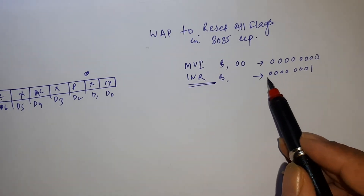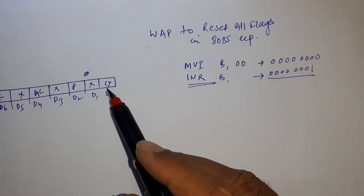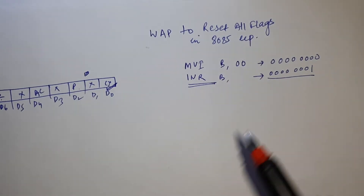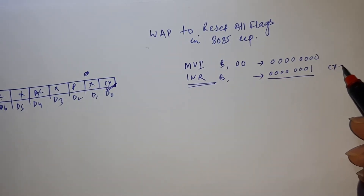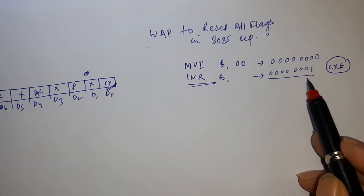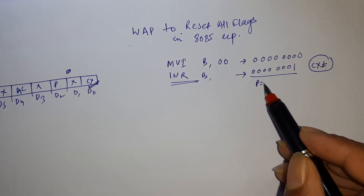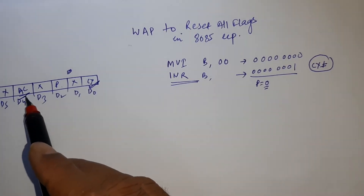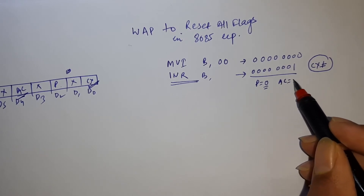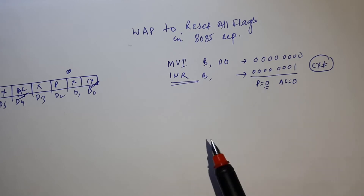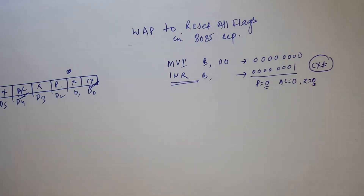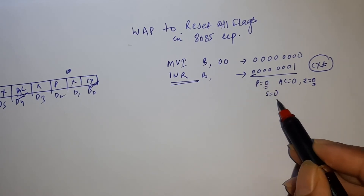Let's check which flag is set or reset in this case. For the parity flag, the number of 1s is odd, so parity flag is reset. For auxiliary carry, there is no carry generated, so auxiliary carry is also reset. The zero flag: total output should be 0 but output is 01, so zero flag is also reset. Sign flag value is 0, also reset.